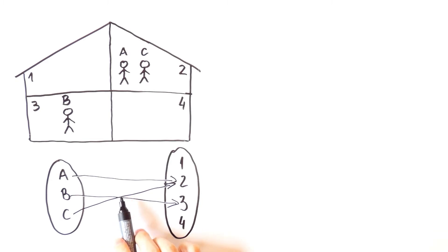And with this, we actually represented one function. That function maps the set of people A, B and C into the set of rooms 1, 2, 3 and 4.